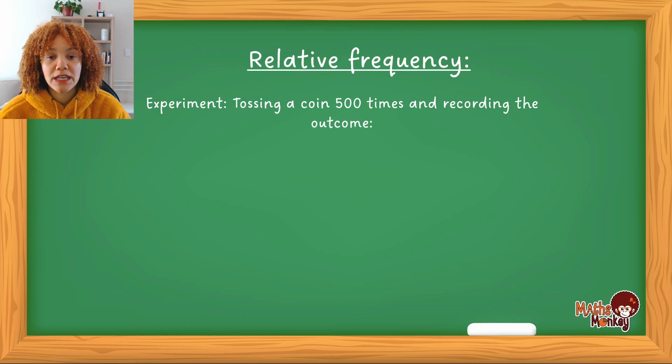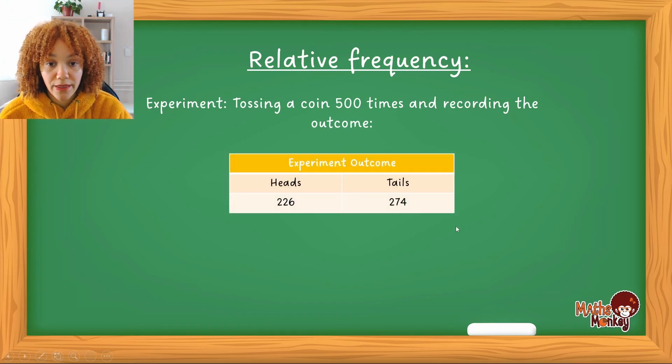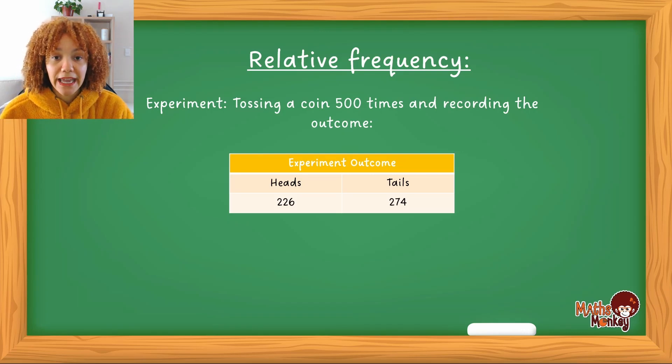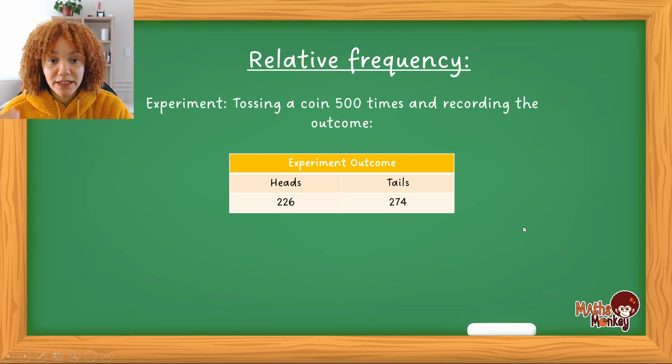But how do we apply this? So a nice example for me to show you and explain this concept to you is by doing a little experiment of tossing a coin. So let's say we decide to toss a coin 500 times and record the outcome. There's only two outcomes for each coin toss and that's going to be heads or tails. So we do this 500 times and then we actually record the data. So heads we land on 226 times and tails we land on 274 times in total of the 500. So again this is based on an actual experiment.